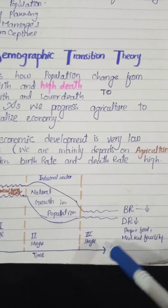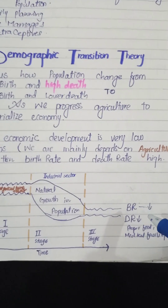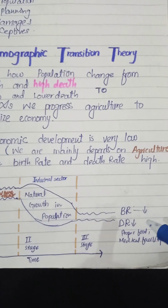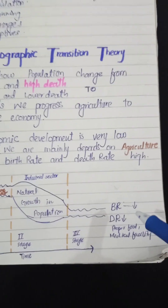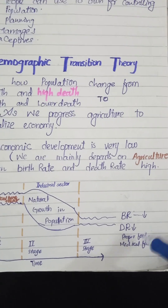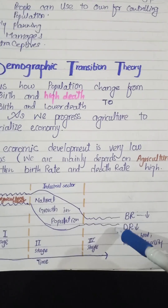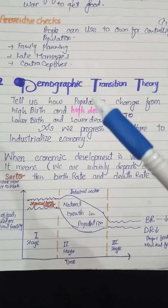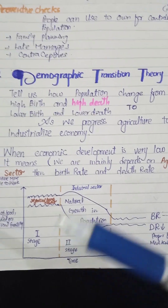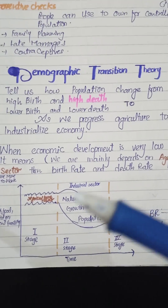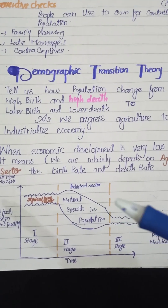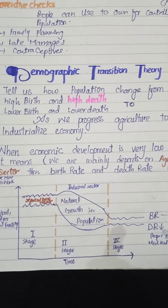Then we have the third stage. In Stage 3, both the birth rate and death rate are low. This is the stage seen in developed countries, where we have proper food and medical facilities at a high and peak level. This is the demographic transition theory — we learned how birth rate and death rate change as we shift from agriculture to the industrial sector.